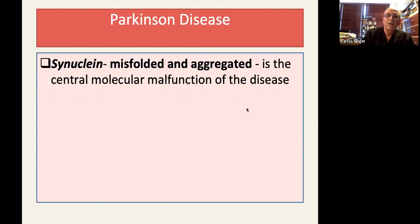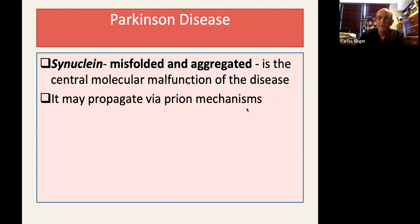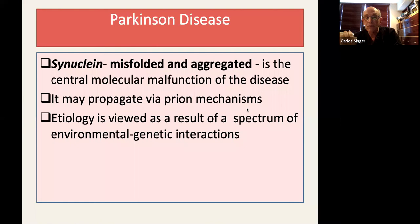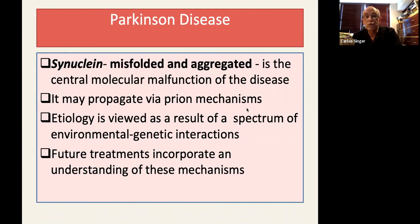Synuclein, which is misfolded and aggregated, is the central molecular malfunction of the disease. It may propagate via prion mechanisms. Etiology is viewed as a result of a spectrum of environmental genetic interactions. Future treatments incorporate an understanding of these mechanisms. Thank you very much for your attention.